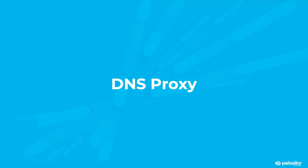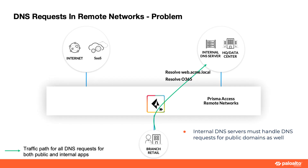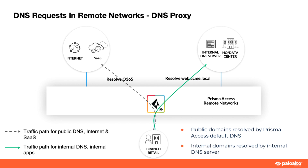DNS proxy. By default, Prisma Access for remote networks sends all DNS requests to customer DNS servers, meaning internal servers must handle public domains as well. Moving forward, you'll be able to use DNS proxy where DNS requests for internet traffic are sent to public DNS servers, while internal DNS is used for internal applications.